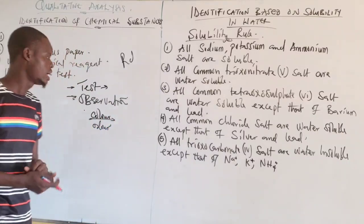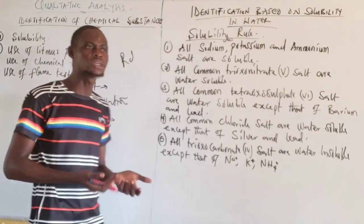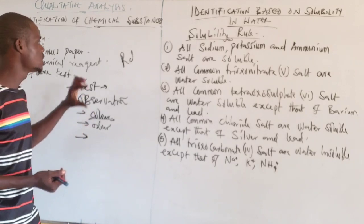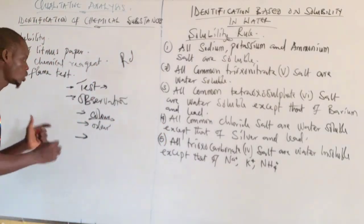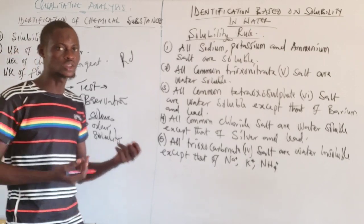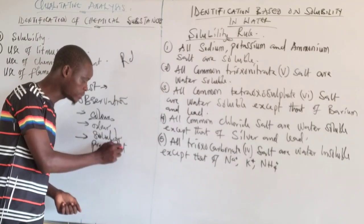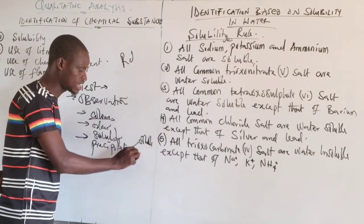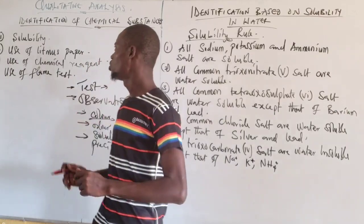Another observable property is precipitation — whether the test forms a precipitate. Solubility is also important: whether what is formed is soluble or insoluble. The precipitate itself might be a soluble precipitate or an insoluble precipitate. These are what you should note in qualitative analysis.